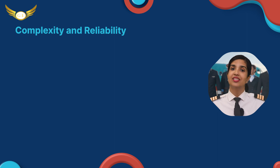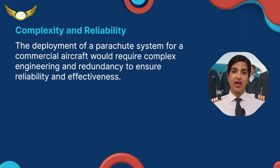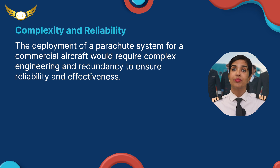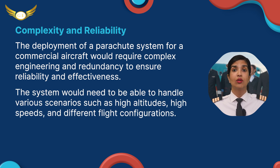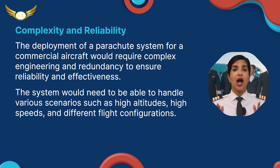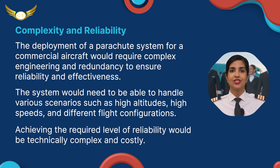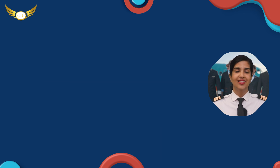2. Complexity and Reliability. The deployment of a parachute system for a commercial aircraft would require complex engineering and redundancy to ensure reliability and effectiveness. The system would need to be able to handle various scenarios such as high altitudes, high speeds, and different flight configurations. Achieving the required level of reliability would be technically complex and costly.